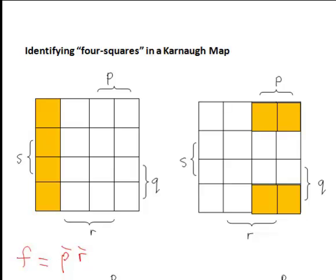But four squares can also appear broken up across two squares of the top row and the bottom row or two squares of the left column and the rightmost column. So let's look at this one here for instance. This second one here is actually expression F is equal to, in this case they are both in P and also all of them are consistently in S bar.